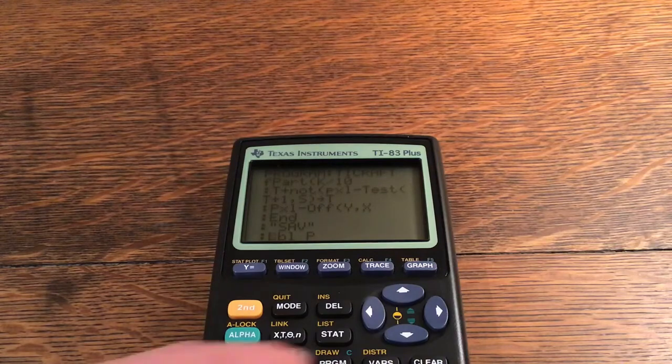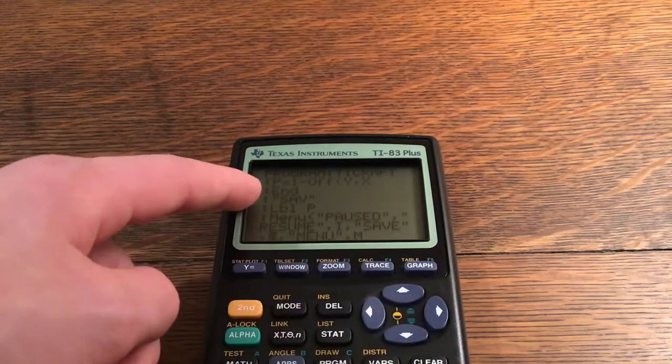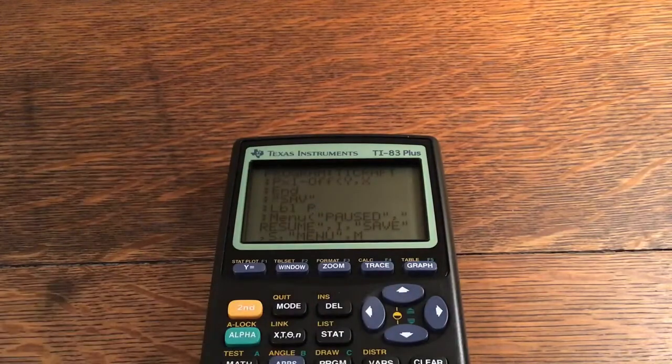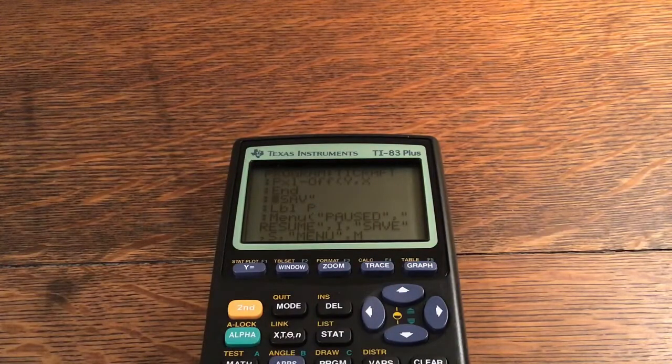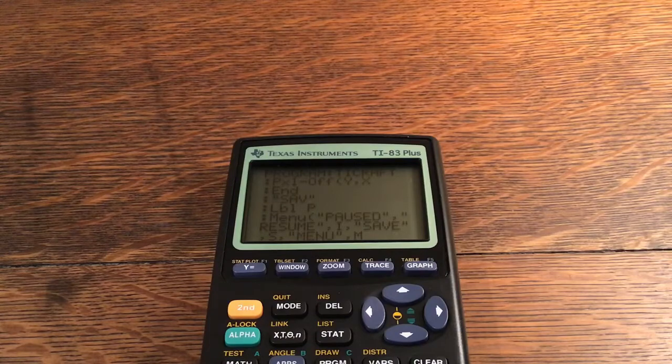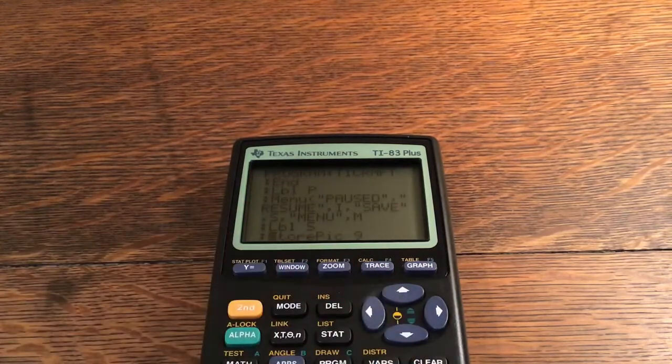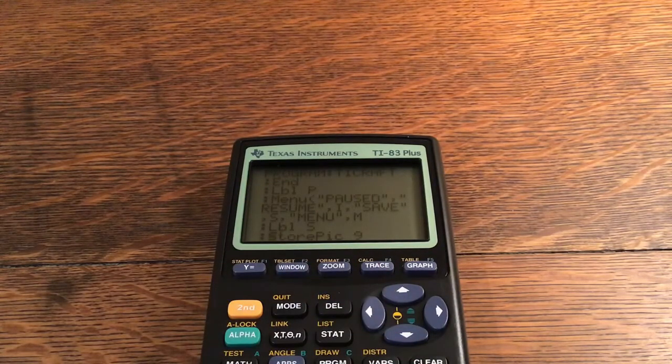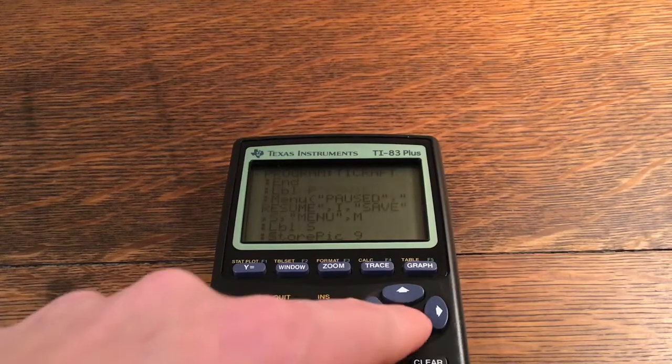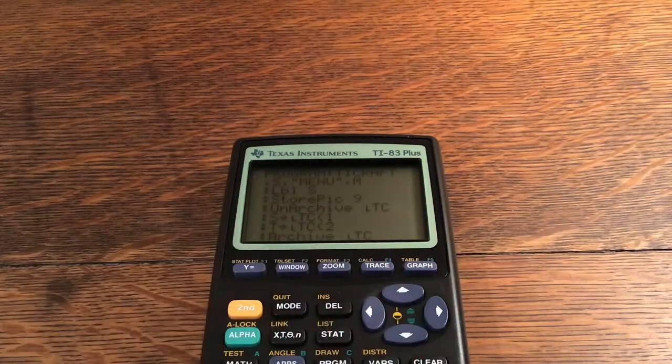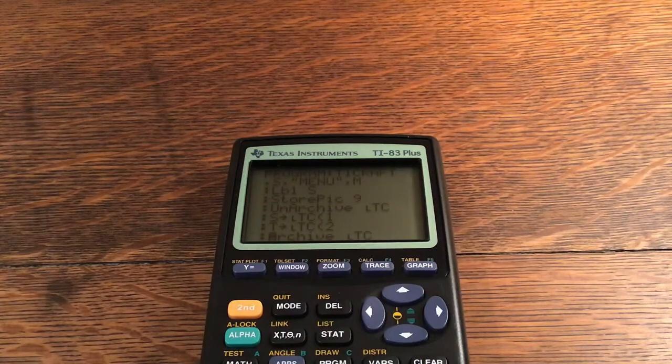T plus not pixel test at T plus 1 comma S store into T. Pixel off at Y comma X. Label P, menu: Resume comma I comma Save which is S and Menu comma M. Label S: Store Pic 9, unarchive LTC, S store into LTC at 1 and T store into LTC at 2, unarchive LTC and go to P.